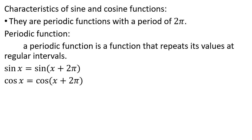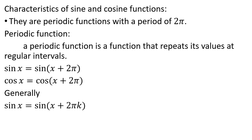The periodic function concept: sin and cosine are periodic functions with period 2pi. Generally, sin x equals sin of x plus 2pi times k, where k is an integer — for example, 2pi times 1, 2pi times 2, and so on.